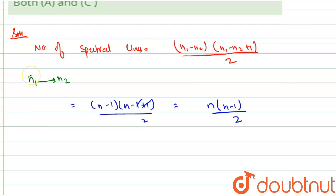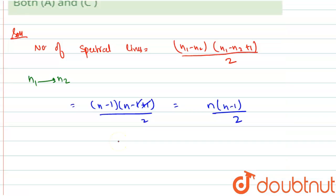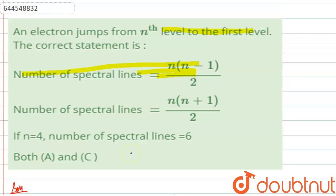if n equals 4, number of spectral lines equals 6. On putting n equals 4 in this equation, we get 4 into 4 minus 1, which is 3, upon 2, equals 6.